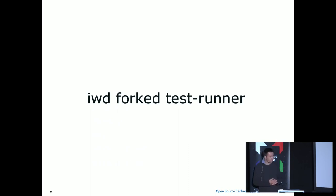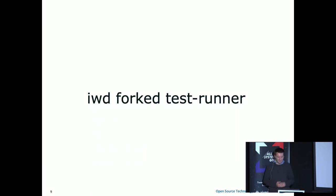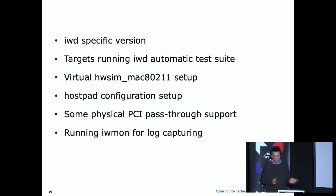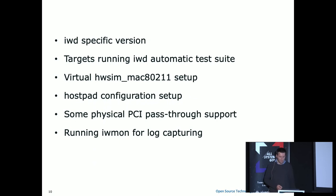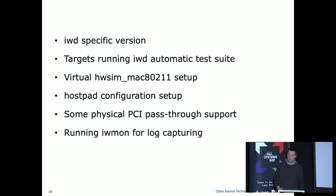About five years ago we started IWD, the new Wi-Fi daemon for Linux. We ended up having the same needs: more testing, more unit tests, run this and not waste any time. The guys working on the project forked TestRunner and made it completely Wi-Fi specific. The code base doesn't look alike, you might see some resemblance — it's called the same but works completely differently. Besides starting KVM with different options, it's a different beast: it's targeted at a test suite, has a HW-SIM setup, needs to start hostapd with 30 million different configurations, does physical PCI pass-through, and has extra logging that needs to get back to the host.